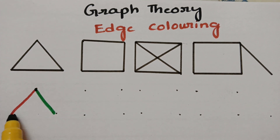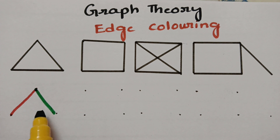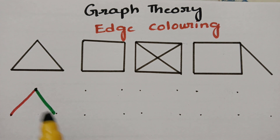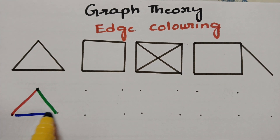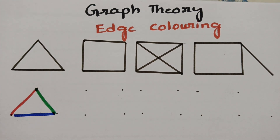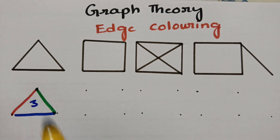So if I take green here for one edge, the adjacent edge shouldn't be of the same color, so I have to prefer another color. I am taking blue. The chromatic number for this coloring is 3.